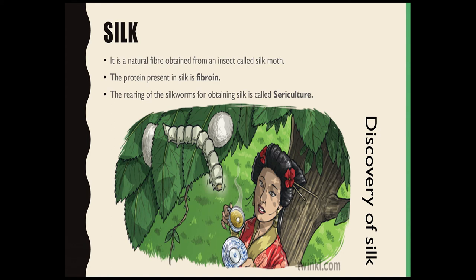First of all, let us understand what is silk. Silk is a natural fiber. All the fibers which are obtained either from plants or animals are considered to be natural fibers. As silk is obtained from an insect called the silk moth, it is considered to be a natural fiber of animal origin.